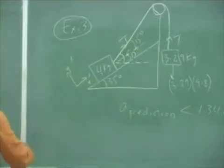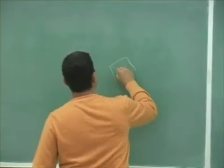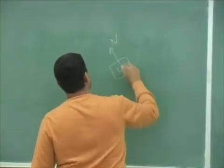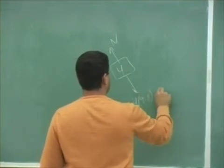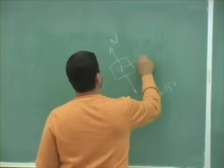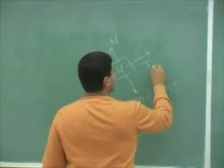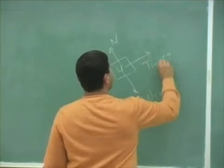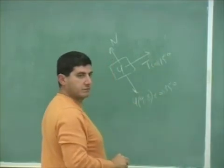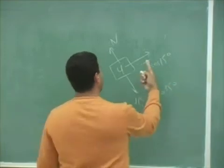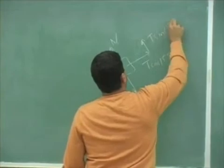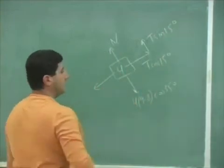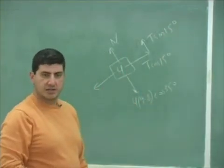So it's going to look like this now. The forces on the four kilogram, you've got the normal force. You've got 4 times 9.8 times cosine of 35. You've got T cos 15, this way. You have T sin 15. And then you have 4 times 9.8 times sine of 35.